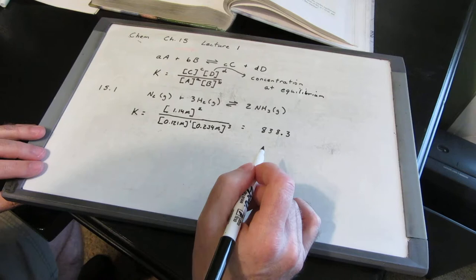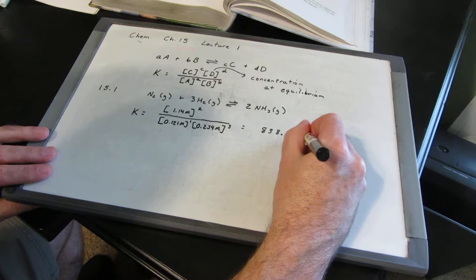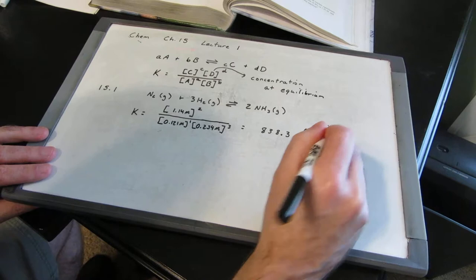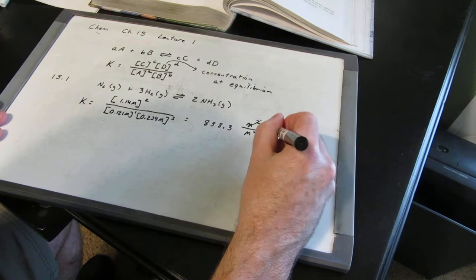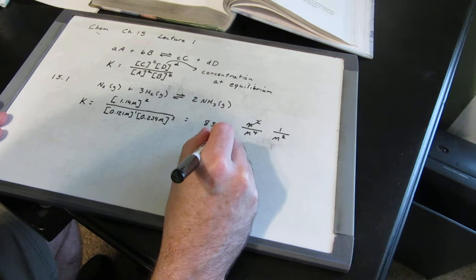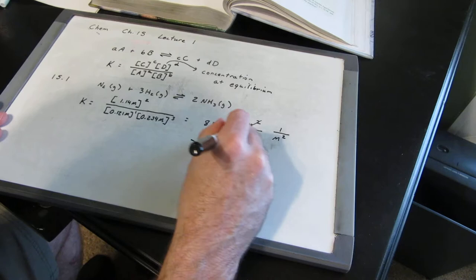For the units: on top you have molars squared, and on the bottom, molars times molars cubed gives molars to the fourth power. So that reduces to 1 over molars squared. The equilibrium constant is 838.3 M⁻².